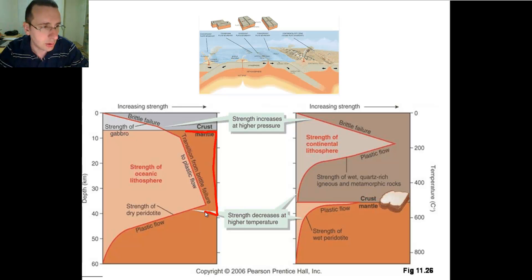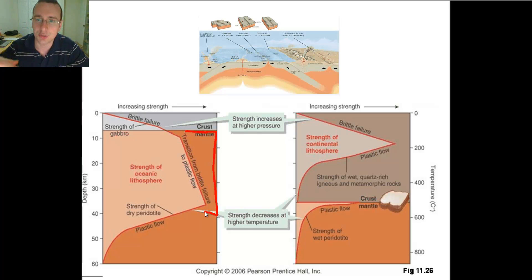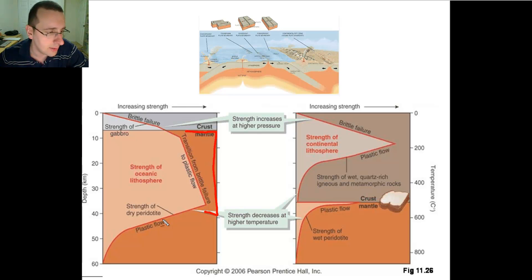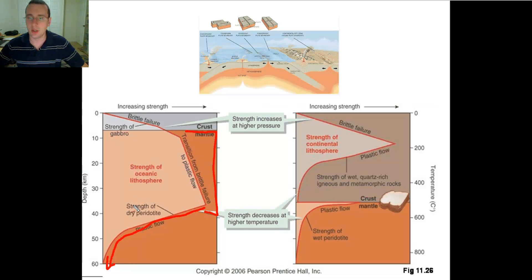Eventually you hit close to the asthenosphere, and the temperature starts to get warmer. The rocks at the bottom become more likely to bend and actually flow. They will be dry, and now they're called peridotite. When they become more bendy, the bottom of the lithosphere is more likely to bend as it gets closer and closer to the asthenosphere.